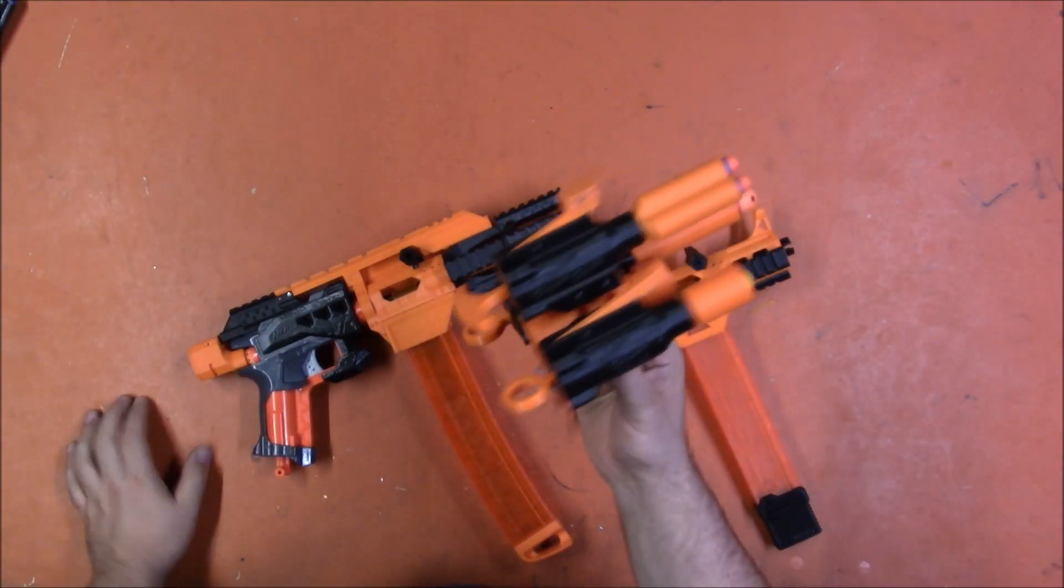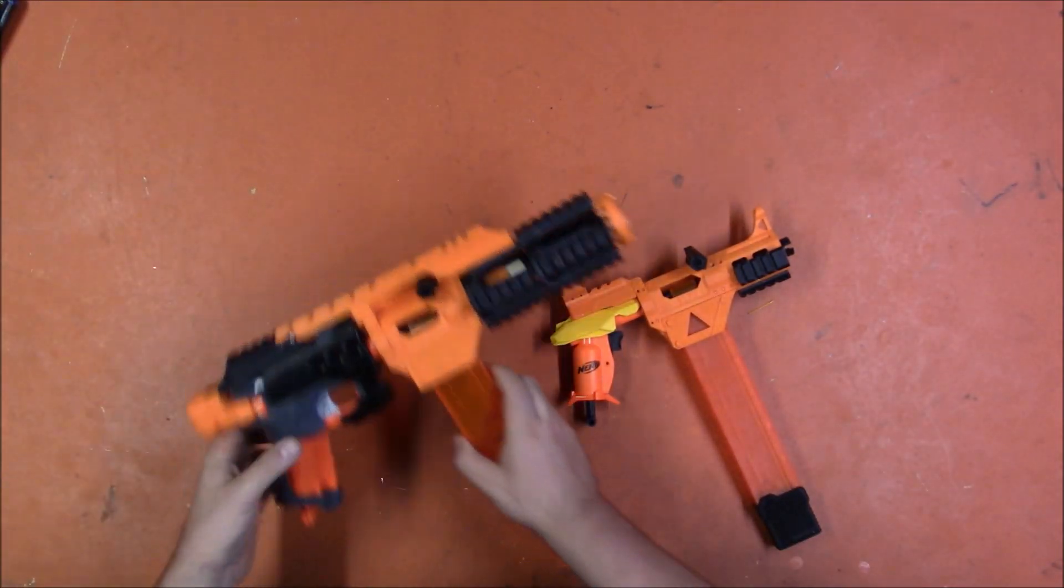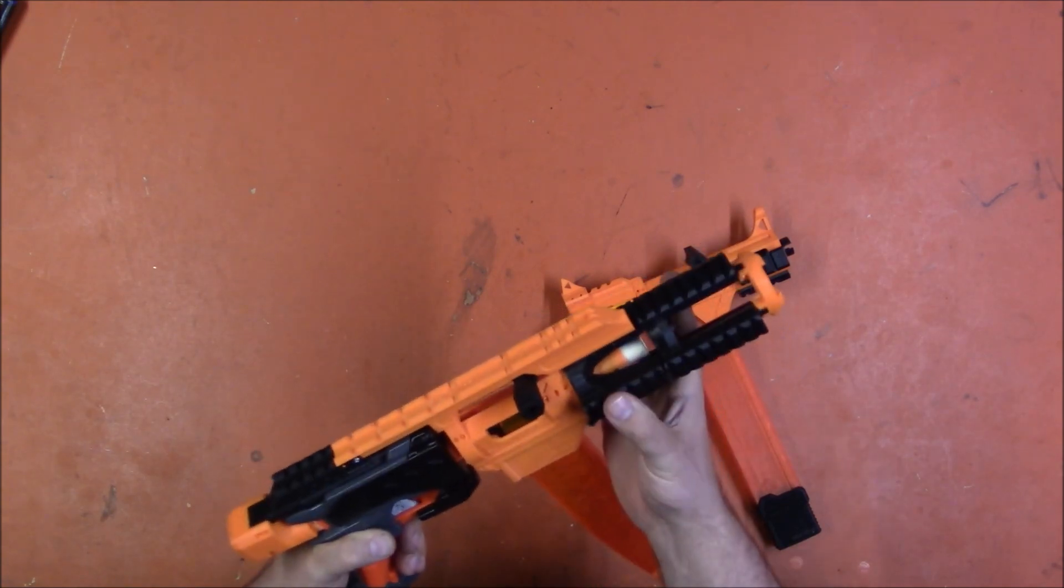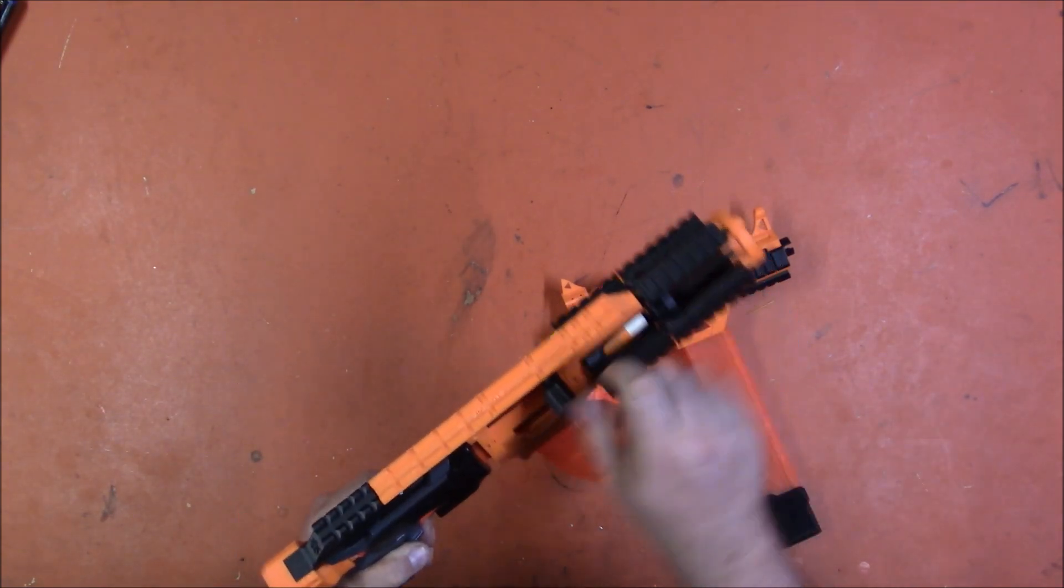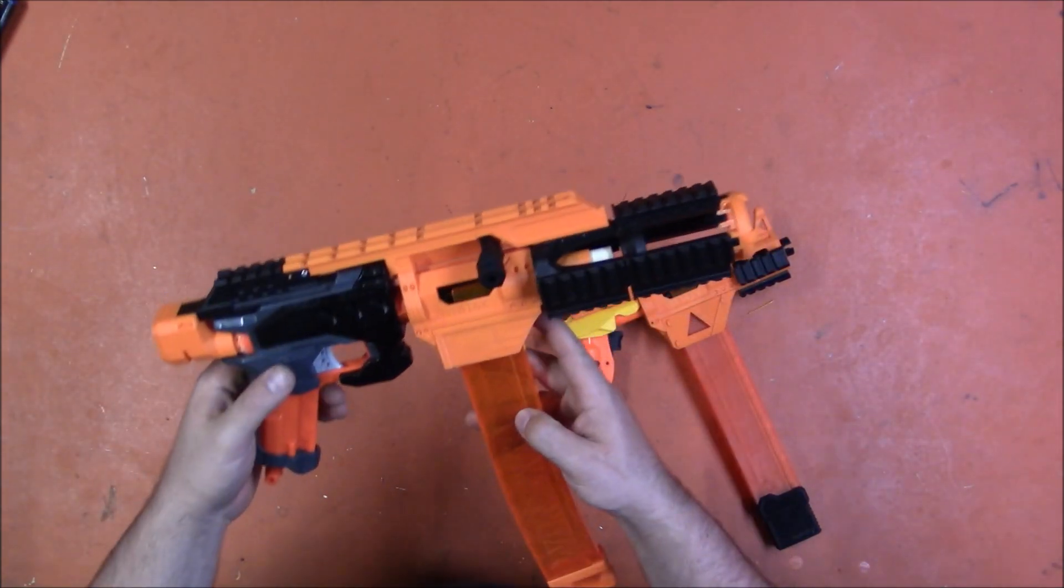So I hypothetically could attach those to this, though I don't know that I think it's stout enough. This section actually might be, I might be able to do one on either side, but it might then get in the way of the breech. But anyway, it's got rail on all sides so you can attach all sorts of things to it.